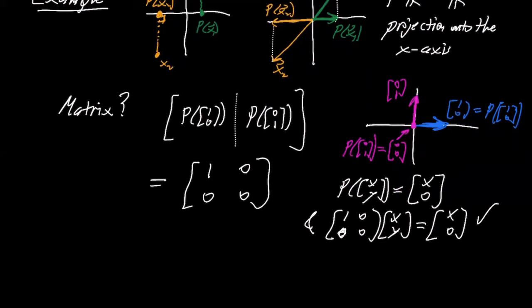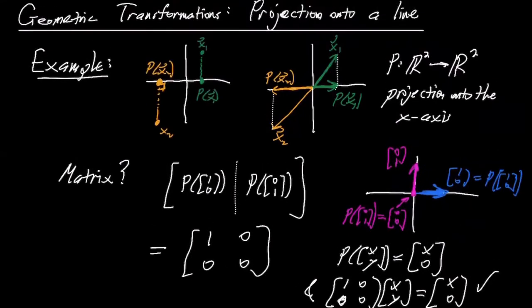Projection comes up a lot in applications and is really important. Projecting onto the x-axis or y-axis is easy. This is called an orthogonal projection — you always project at right angles, as if shining a light from far away, perpendicular to the line you're projecting onto.